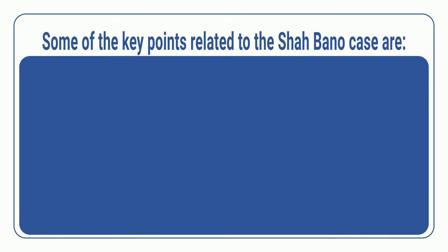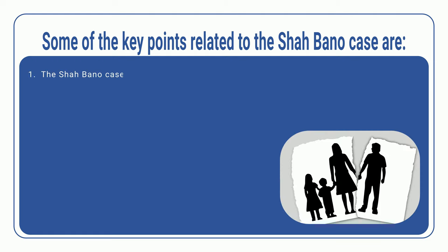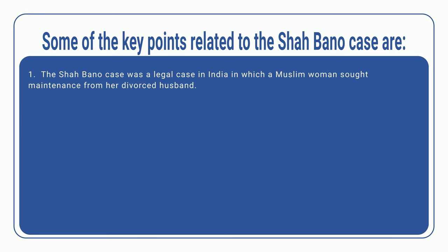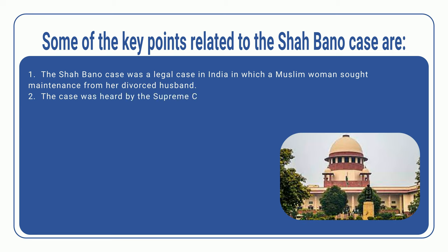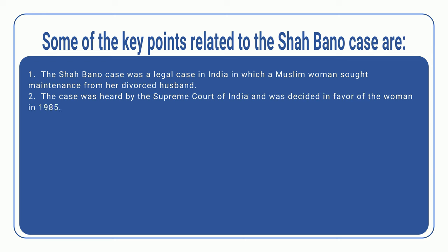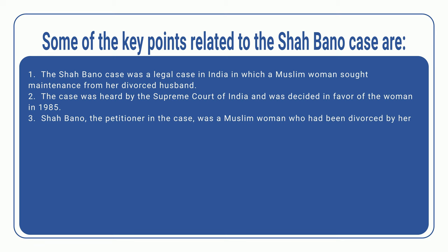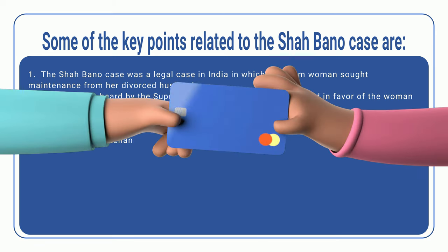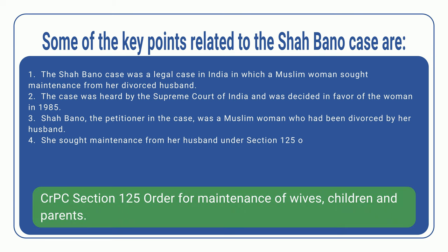Some of the key points related to the Shah Bano case are: 1. The Shah Bano case was a legal case in India in which a Muslim woman sought maintenance from her divorced husband. 2. The case was heard by the Supreme Court of India and was decided in favour of the woman in 1985. 3. Shah Bano, the petitioner in the case, was a Muslim woman who had been divorced by her husband. 4. She sought maintenance from her husband under Section 125 of the Criminal Procedure Code.